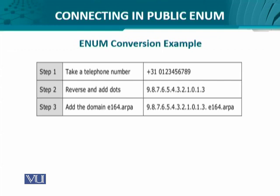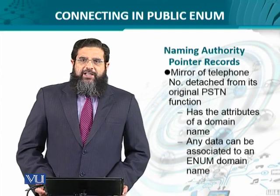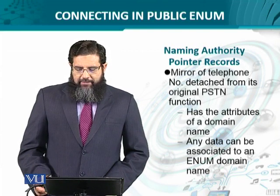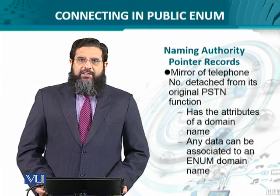Towards the end, as a suffix, we add e164.arpa. From this example we understand that we now have the domain registry as a DNS record available to us against a certain telephone number. This telephone number, in domain format, is available to us to associate any kind of information with it.